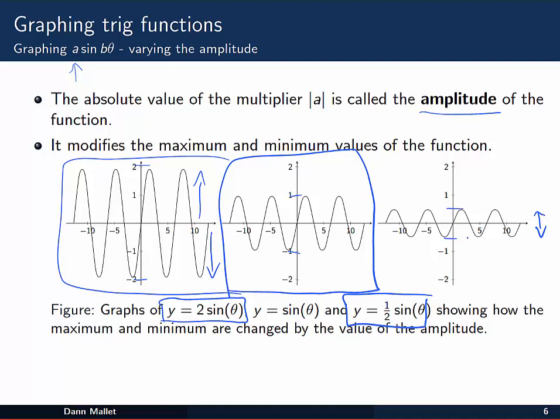On the other hand, if we multiply by 1 half, we get a squished curve, only reaching 1 half positive in the vertical direction and negative 1 half. You can see that that multiplier that sits out the front of sine simply squishes and stretches the graph vertically.